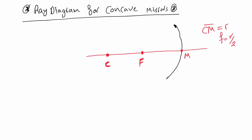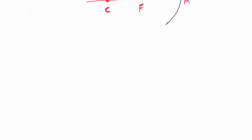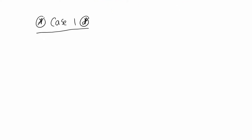The radius is the distance between C and M, and the focal length equals the radius divided by two. We need to keep these two equations in mind. Let's explore the different cases and the different images we can get with the concave mirror. Case number one: we place the object beyond C, the center of the sphere.